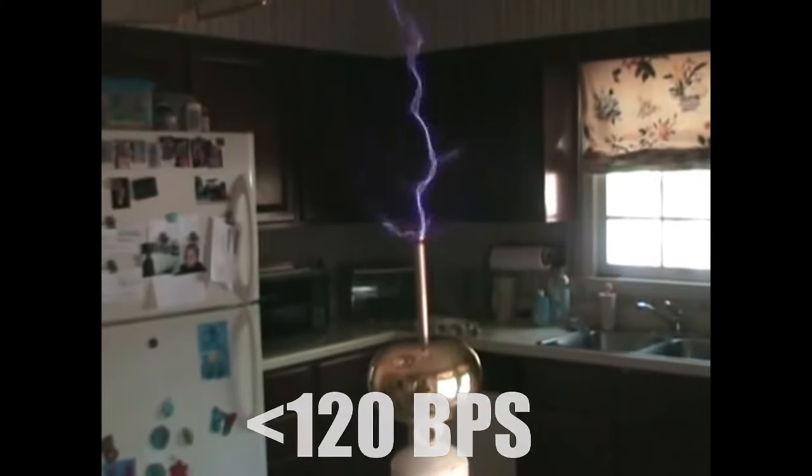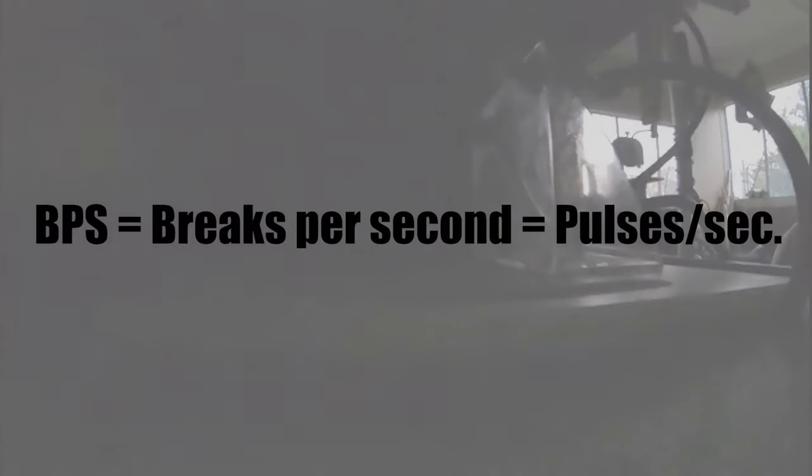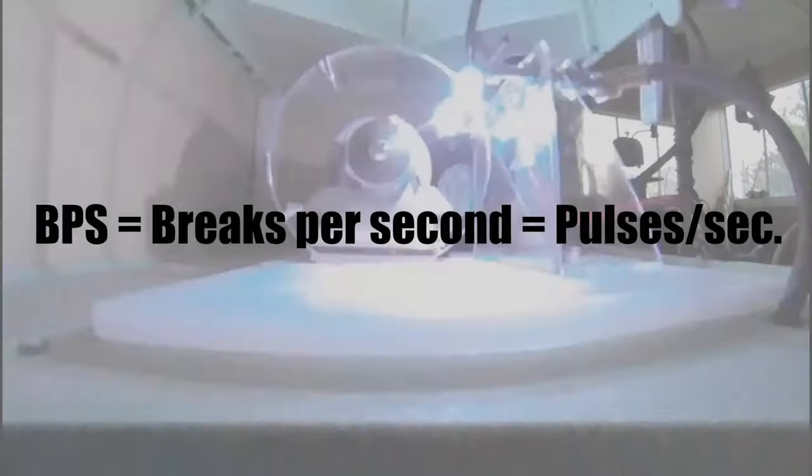First, the breaks per second is generally lower and not very consistent or smooth. For those who don't know, breaks per second is simply the term for how many pulses the capacitor creates across the spark gap each second.